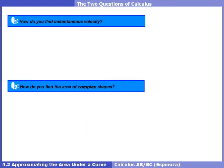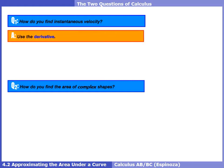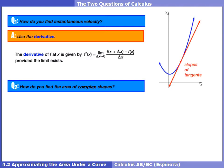Just a quick reminder of the two questions of calculus that we talked about way back in chapter 1. The first question was: how do you find instantaneous velocity, or rate of change? We saw in chapter 2 that the answer was the derivative, given by that limit formula, and visually, the derivative represents the slope of a tangent line.